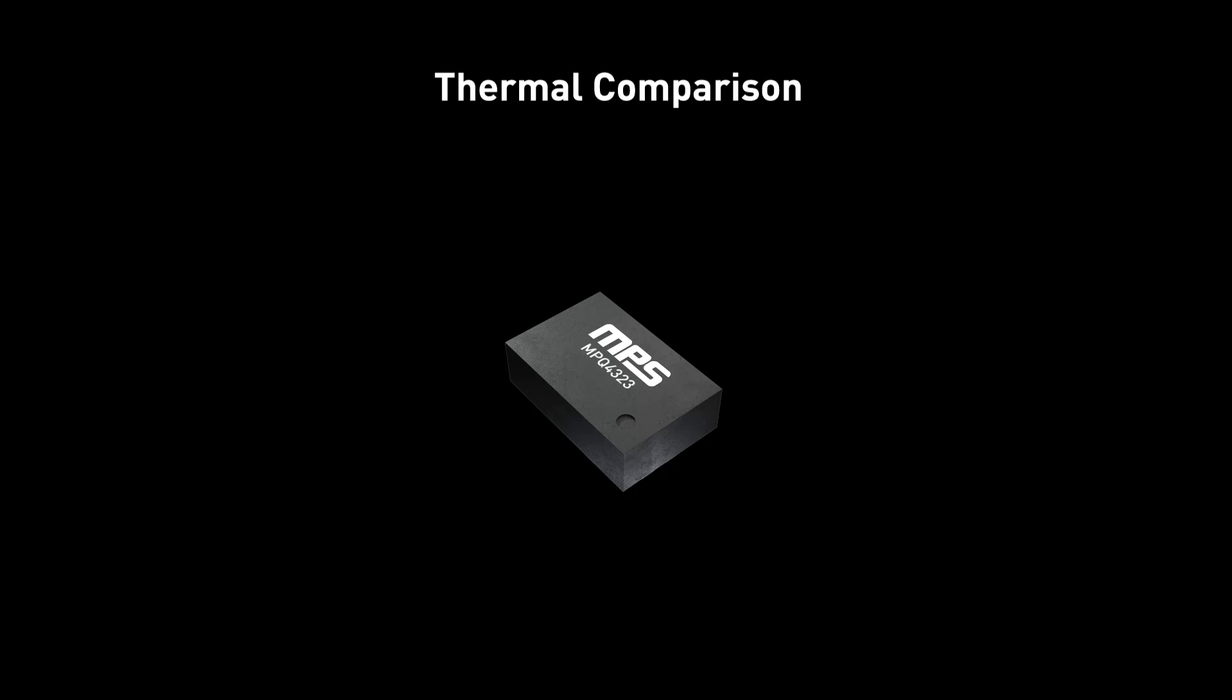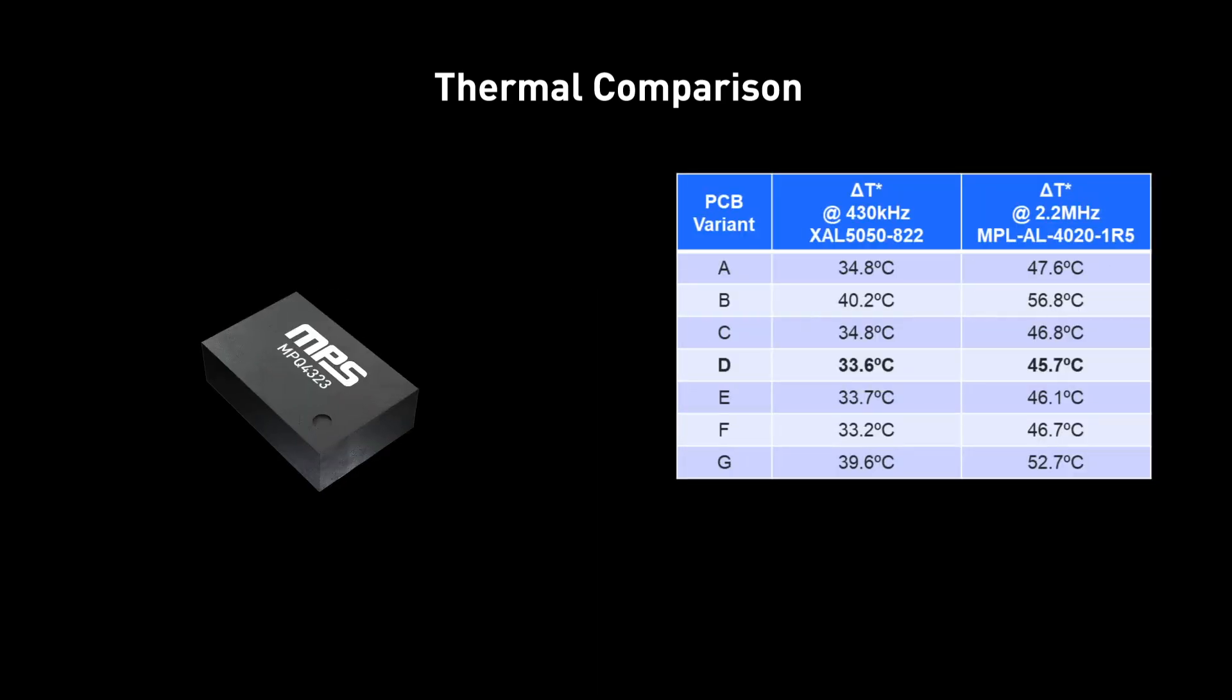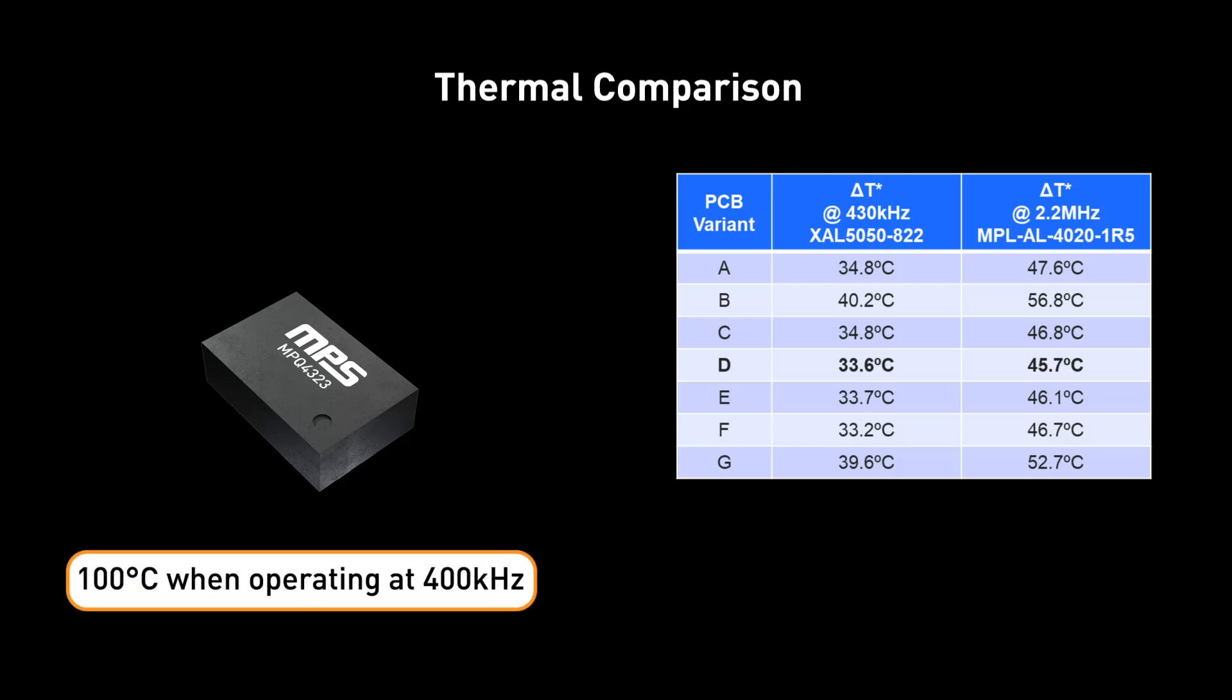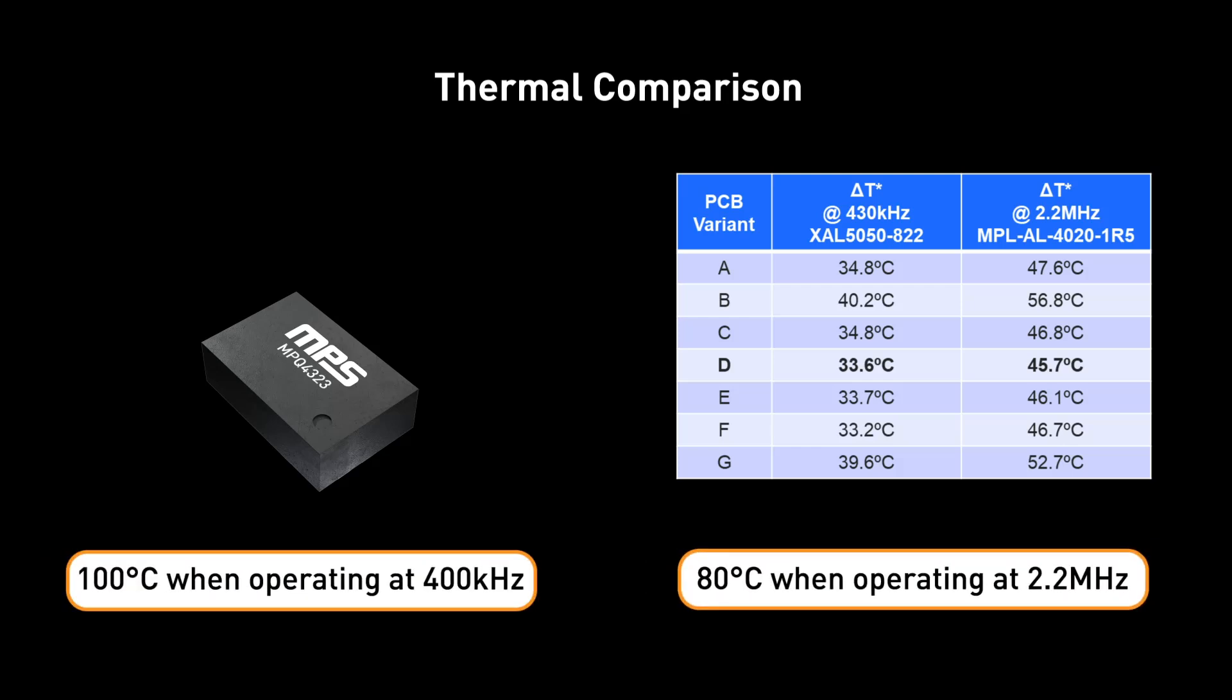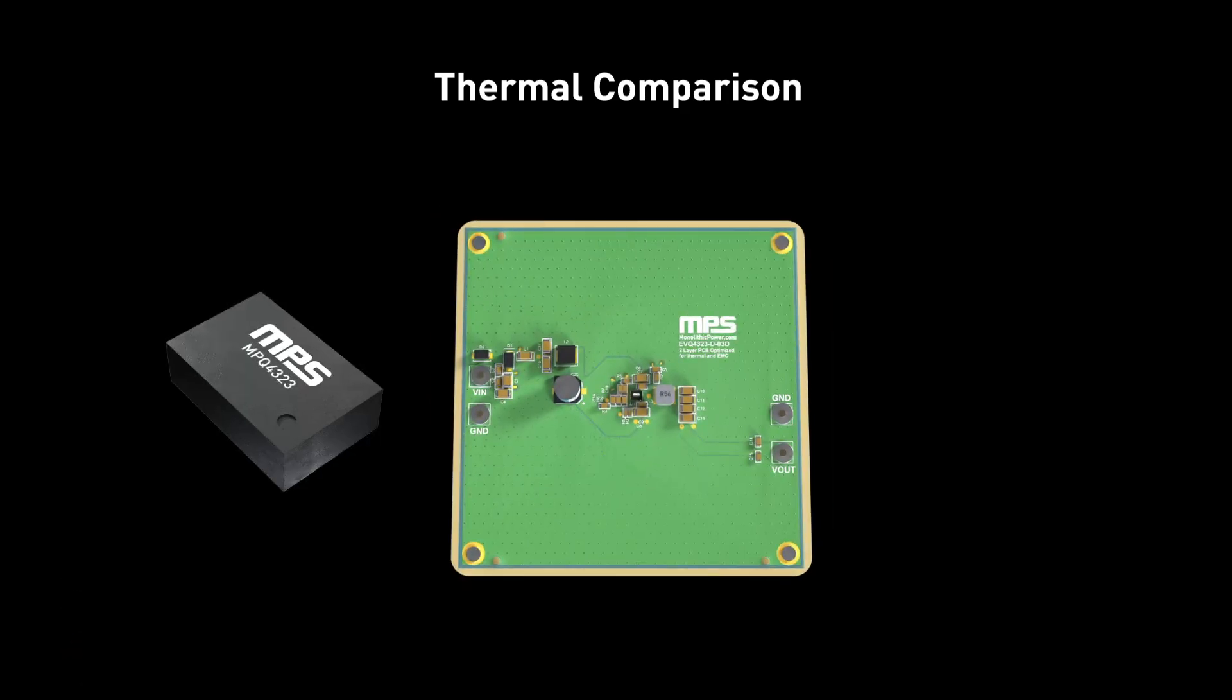The MPQ4323 can achieve full load operation under ambient temperatures that are approximately 100 degrees Celsius when operating at 400 kilohertz, and approximately 80 degrees Celsius when operating at 2.2 megahertz when given a sufficient copper area for dissipation. This excellent performance is a result of optimized PCB layout and MPS's advanced package technology, which allows for more heat to flow into the PCB.